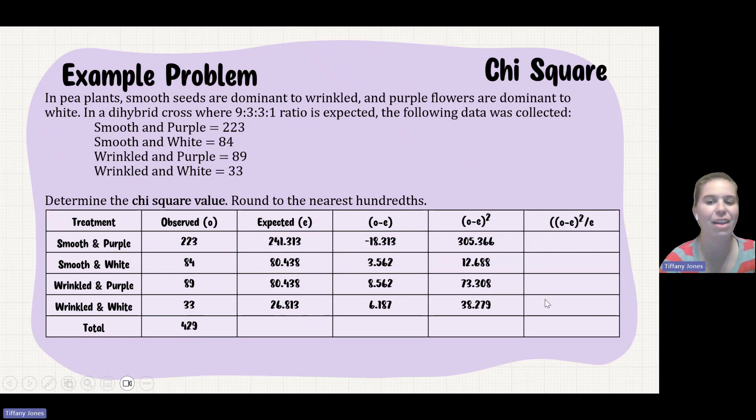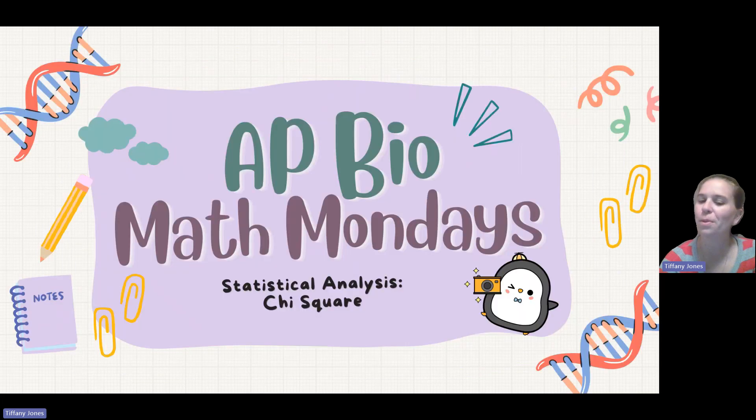And then I'll take this column and I'll divide by my expected, which is going to give me 1.390, 0.158, 0.911, and 1.428. The last step is that I have to add them all together, giving me 3.887. Now I'm not done because I do have to round to the nearest hundredths. So 3.887 will round to 3.89. Hope this has helped.